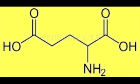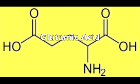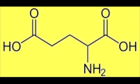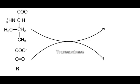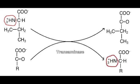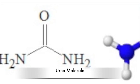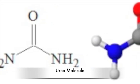The amino group is transferred thanks to the transaminase, transforming the amino acid into its corresponding alpha-ketoacid, and the alpha-ketoacid is transformed into its corresponding amino acid. Some of the alpha-ketoacids commonly used are pyruvate, which is then transformed into alanine, or oxaloacetate, which is then transformed into aspartic acid, or alpha-ketoglutarate. Another amino acid involved is glutamic acid.